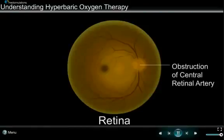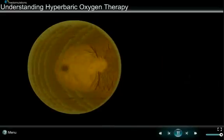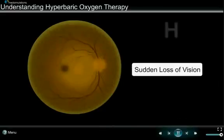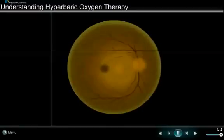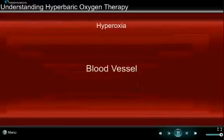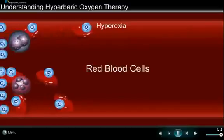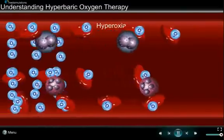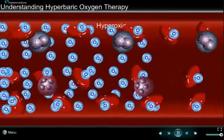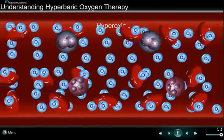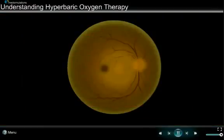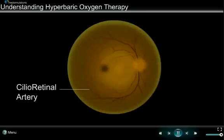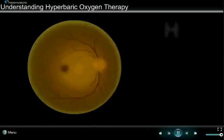The central retinal artery is a blood vessel that supplies blood to the eye. A sudden loss of vision occurs when this blood vessel is obstructed. Hyperbaric therapy increases the oxygen concentration and dissolves oxygen into the blood, resulting in wide oxygen distribution. This allows oxygen to reach the retinal layer of the eye through other blood vessels. In patients with a cilio-retinal artery, increased oxygen reaches the retinal layer faster, leading to rapid healing and return of vision.